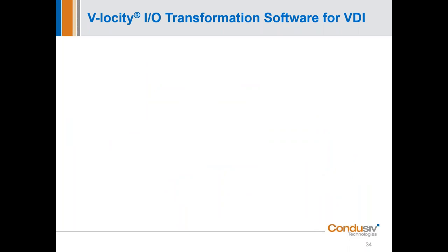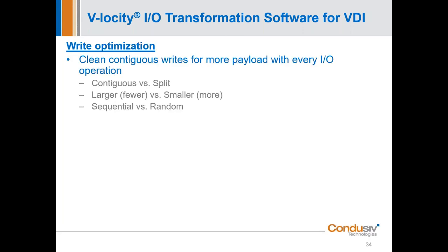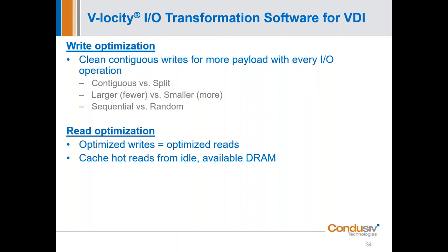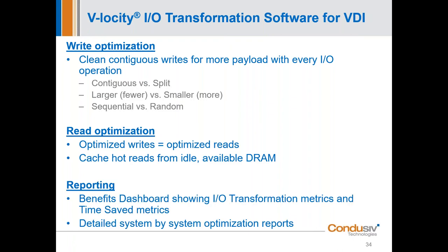Let's take a look at what we do — the two engines. The first engine is write optimization: it does the IO transformation. The second engine is our DRAM read caching engine where we utilize memory. We also have good reporting in our Velocity management console. Deployment is .msi — you can put it right into your gold image of your VDI environment, and then get reporting back through the console after the fact.